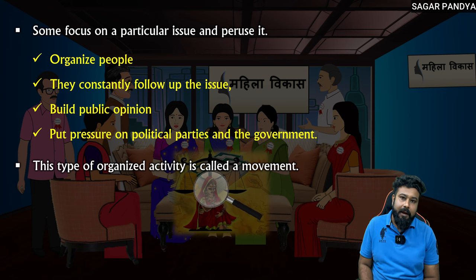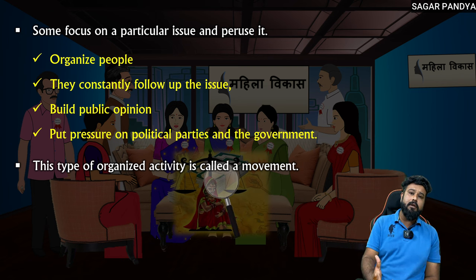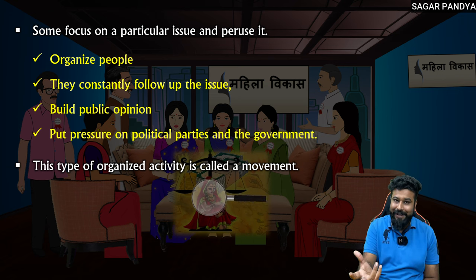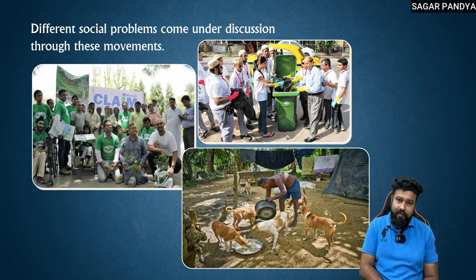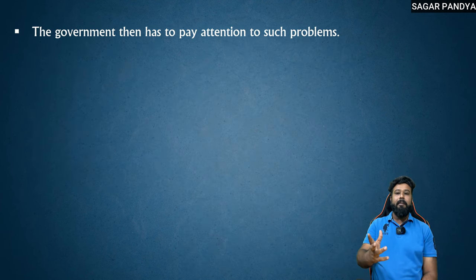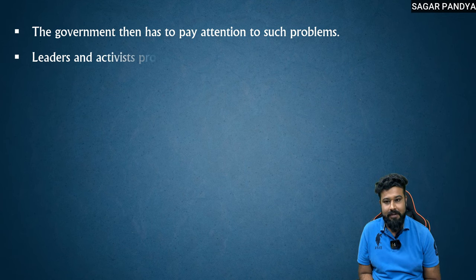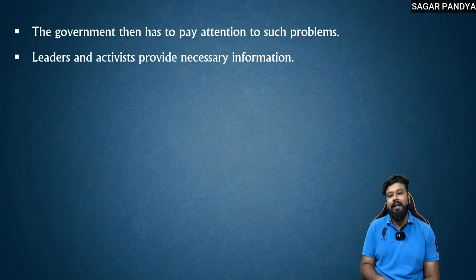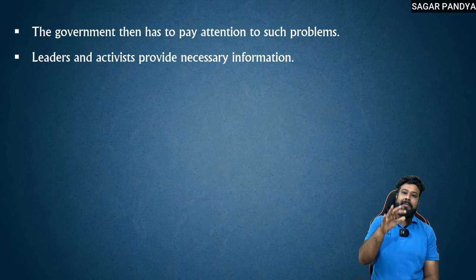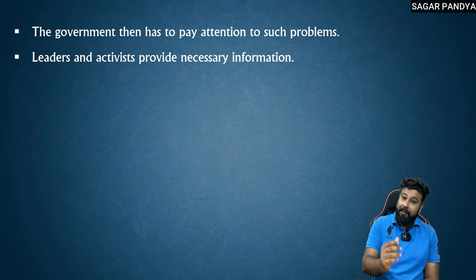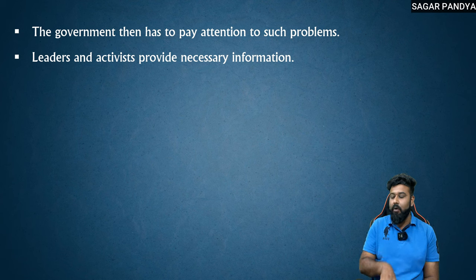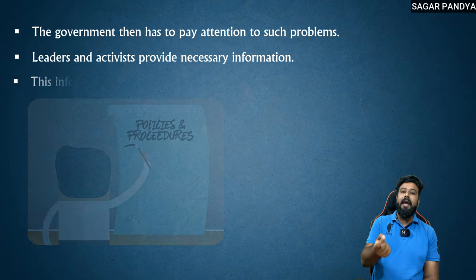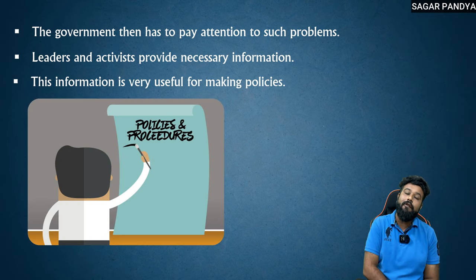Now, movement happens for demands. What kinds of problems can there be? Social problems — for different social problems, people discuss and form movements. The government then has to pay attention to such problems. Leaders and activists come together and provide the necessary information about what the people's demands are. This information is very useful for making policy.